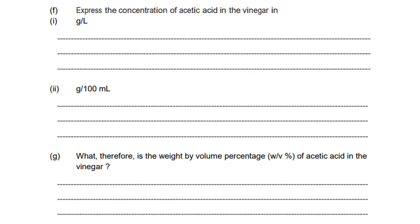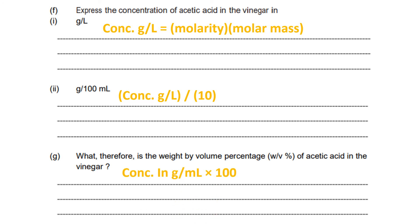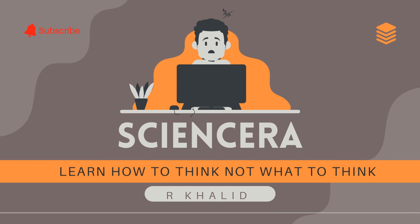Next, express the concentration of acetic acid in the vinegar using these formulas. Concentration in grams per litre equals moles multiplied by molar mass. For grams per 100 ml, divide by 10. Then they ask for the weight by volume percentage of acetic acid in the vinegar, which is calculated by multiplying the concentration in grams per millilitre by 100.